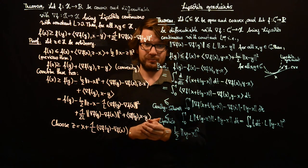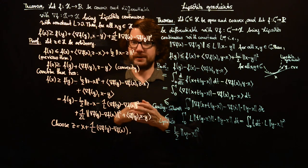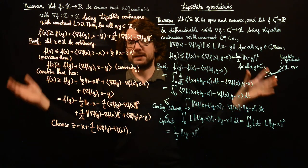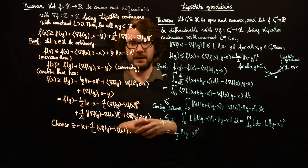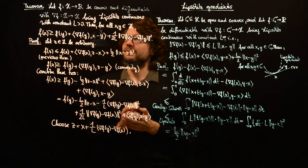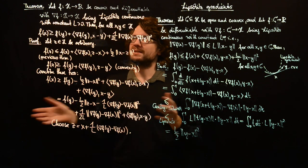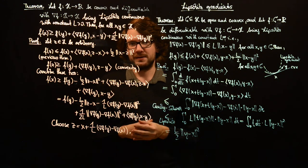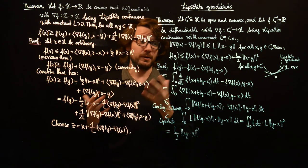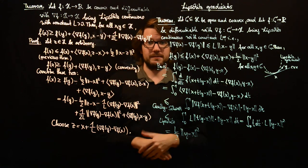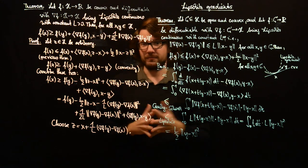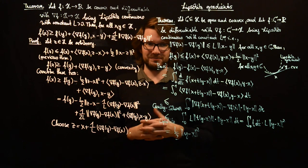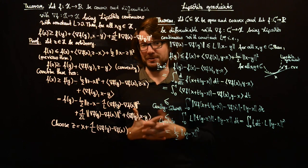Why is this useful? We have merged our two inequalities into one. Whenever we want to decide which inequality to apply, we just have one inequality that gives us the power of both properties. So you don't have to think about which inequality to apply — we just use this one.